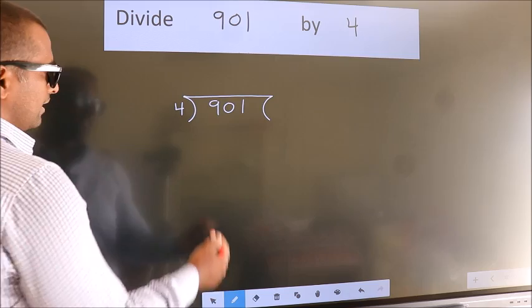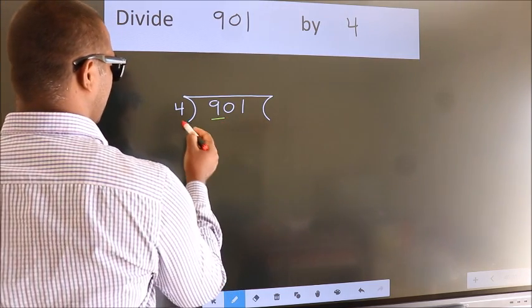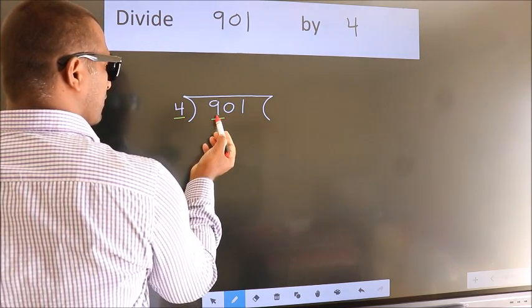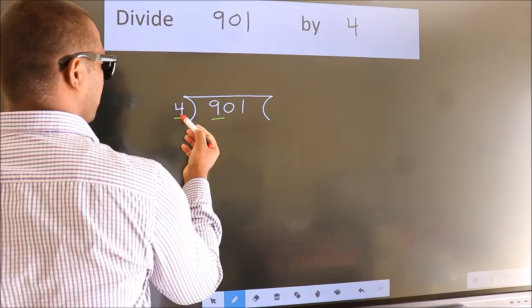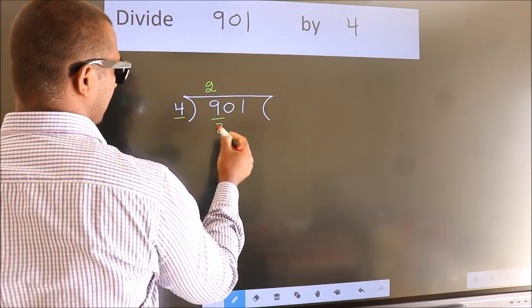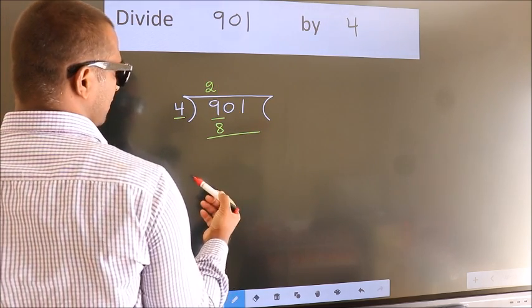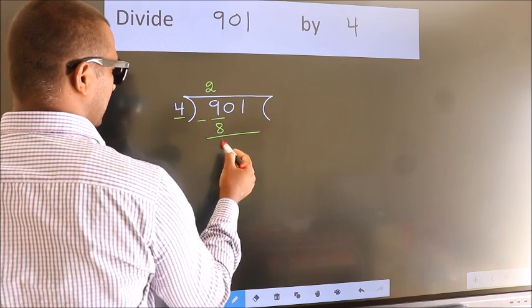Next. Here we have 9, here 4. A number close to 9 in 4 table is 4 twos, 8. Now, we should subtract. We get 1.